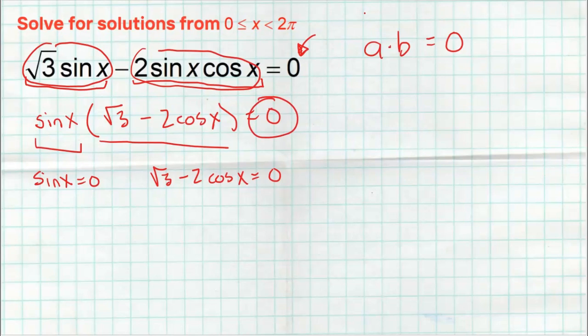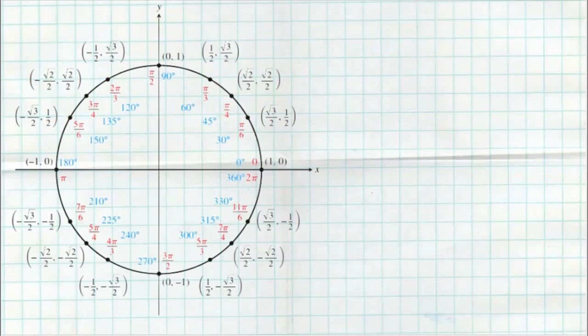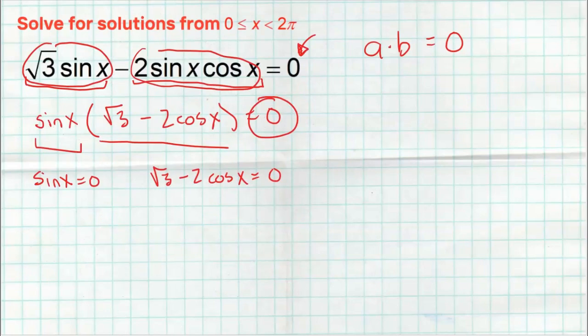So the first equation is: where is sine of x equal to zero? That's a pretty simple one. Grab your unit circle if you need to — we're looking at where the y-coordinate is zero, and that happens at zero and at pi. It also happens at two pi, three pi, etc., but we only want answers from zero to two pi, not equal to two pi. So the two answers here are zero and pi.